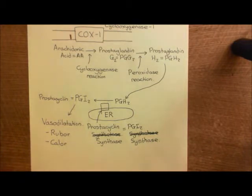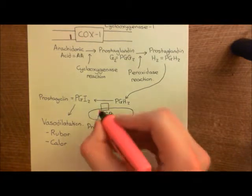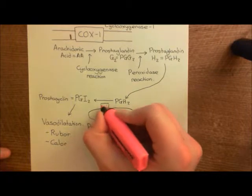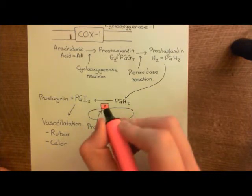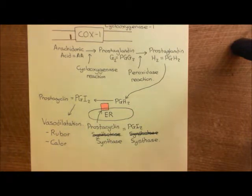So it's prostacyclin synthase that is this enzyme within the membrane of the endoplasmic reticulum, which converts prostaglandin H2 into prostaglandin I2.